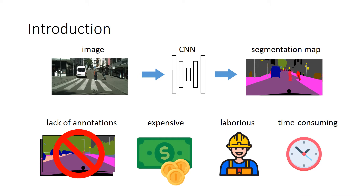Semantic segmentation aims at assigning each pixel in the image to a semantic class. Recently, convolutional neural network-based segmentation models have achieved remarkable progress. To train such a network requires a large amount of data. However, annotations for semantic segmentation are difficult to collect since they are expensive, labor-intensive, and time-consuming.